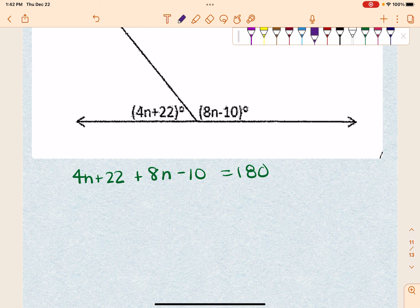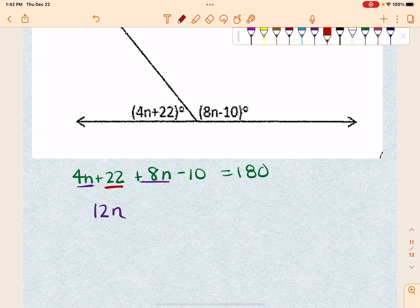Okay, now we do have a few things we can do. We can put these two together. So 4n plus 8n is 12n. And then I can put these two together. So positive 22 and negative 10 is positive 12 equals 180.